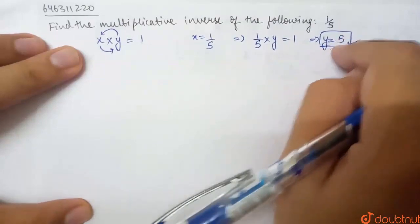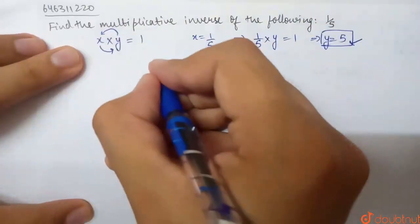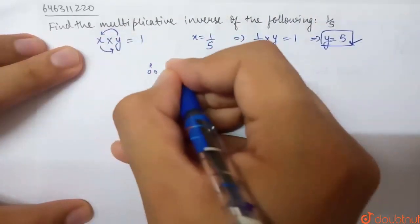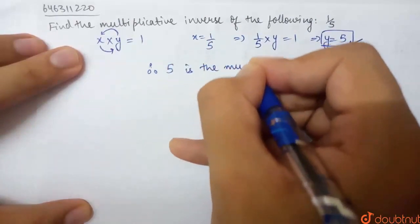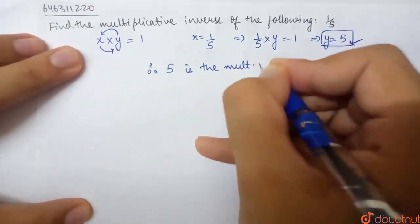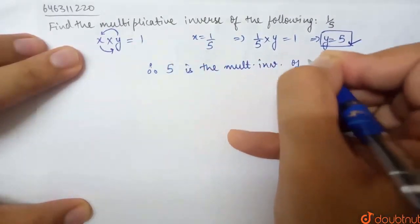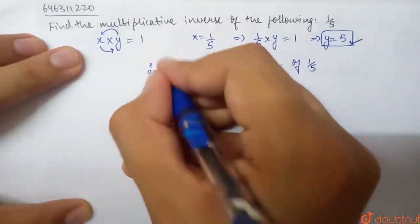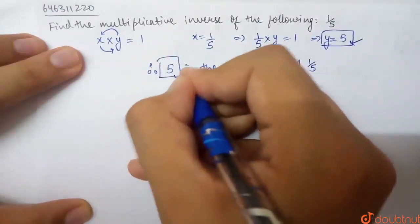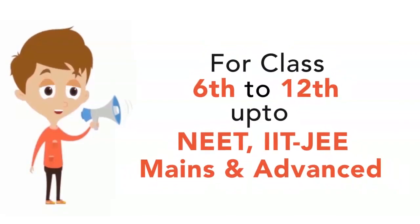So, this means 5 is the multiplicative inverse of x. Therefore, 5 is the multiplicative inverse of 1 by 5, and 1 by 5 is the multiplicative inverse of 5.